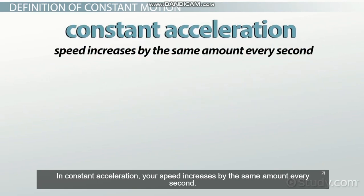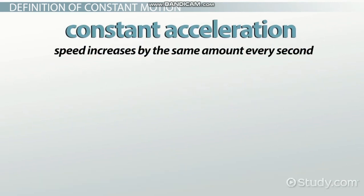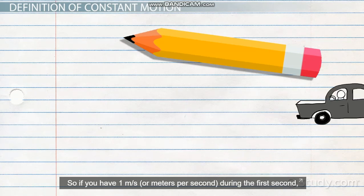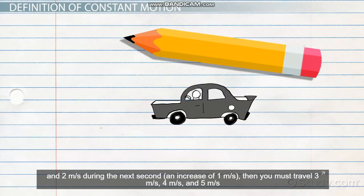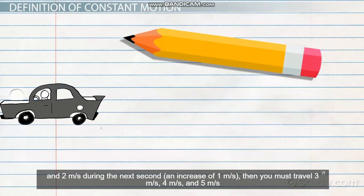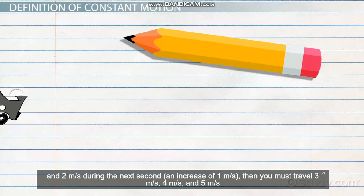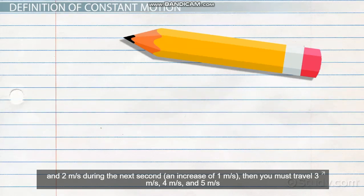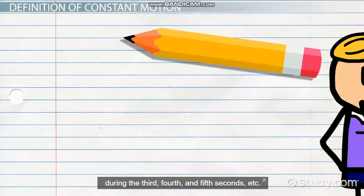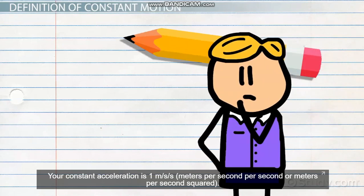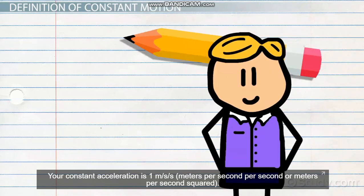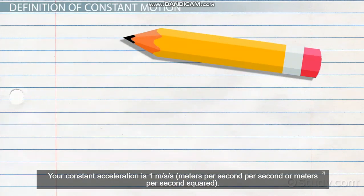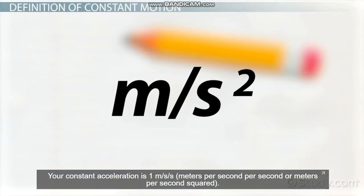In constant acceleration, your speed increases by the same amount every second. So if you travel one meter per second during the first second and two meters per second during the next second — an increase of one meter per second — then you must travel three, four, and five meters per second during the third, fourth, and fifth seconds, and so on. Your constant acceleration is one meter per second per second, or meters per second squared.